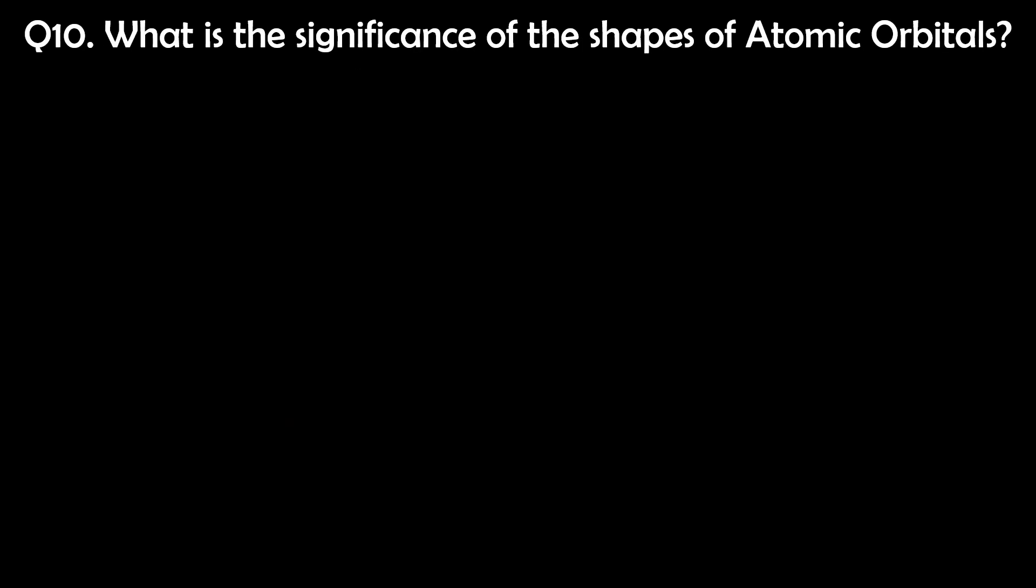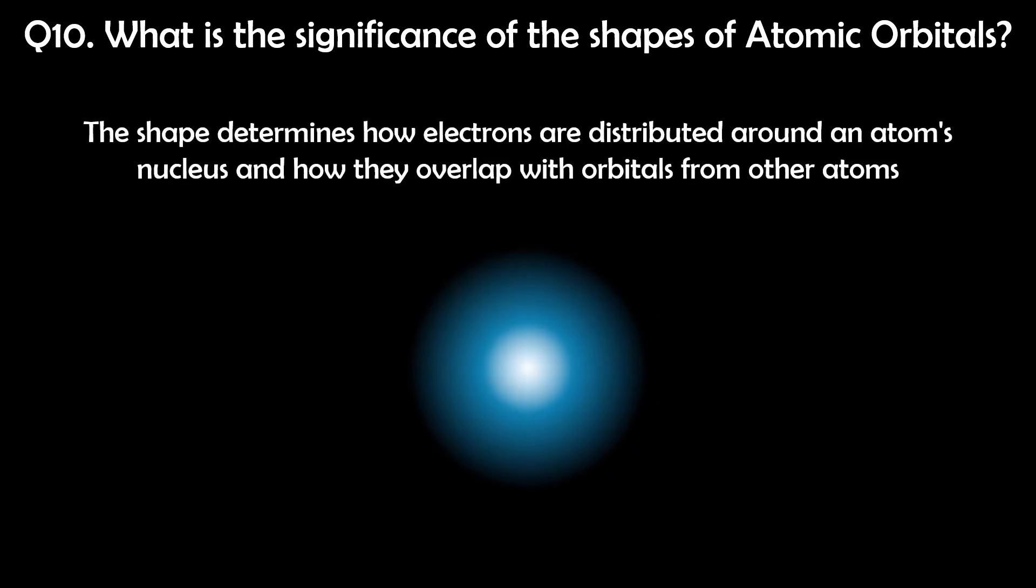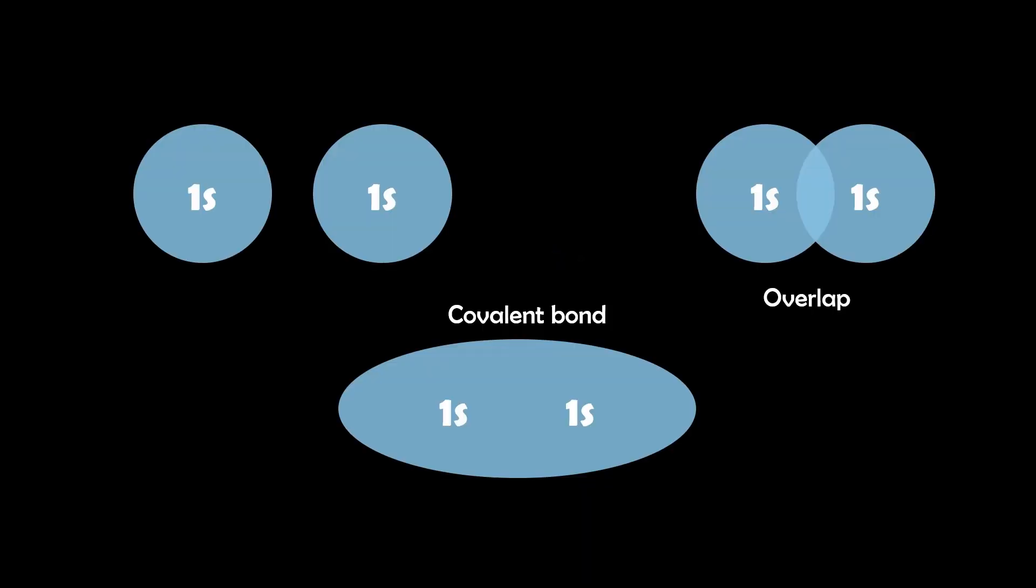Question 10. What is the significance of the shapes of atomic orbitals? The shape of an atomic orbital determines how electrons are distributed around an atom's nucleus, and how they overlap with orbitals from other atoms. This is critical in understanding the nature of chemical bonds and the physical and chemical properties of molecules. For example, if two atoms have an outer shell that is an S orbital, they are likely to bond due to compatible symmetries and energy levels.